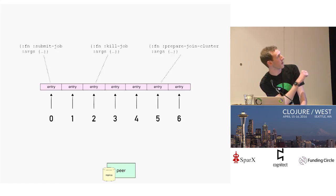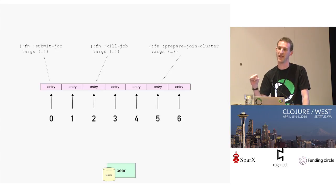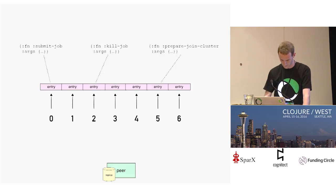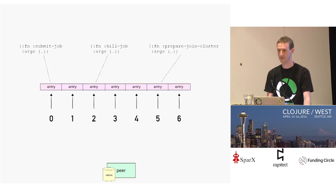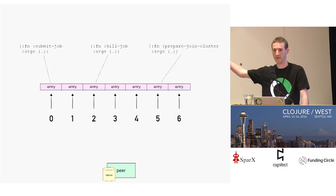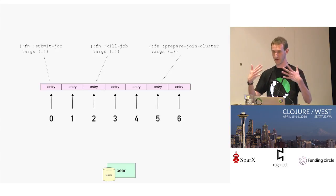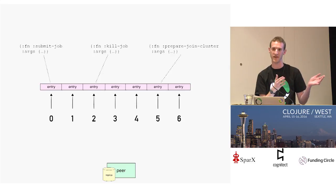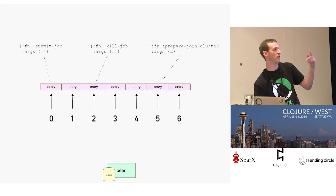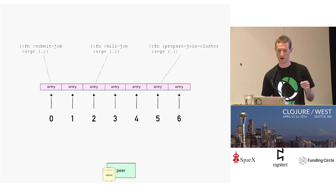The log entries are Clojure maps that represent functions and arguments to be applied to each peer's local replica. The replica is just a data structure with well-defined transition semantics — we resolve the keyword in the function field to an actual function inside Onyx and use it to update the replica. These functions are pure, deterministic, and idempotent. That's the critical property: if any peer reads up to the nth entry, all peers who have read up to the nth entry will have the exact same value.